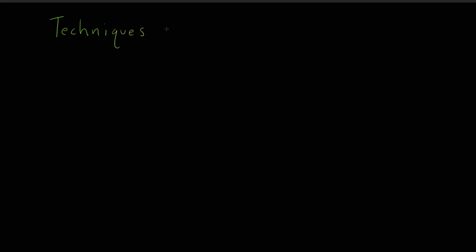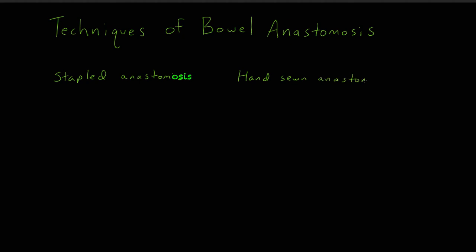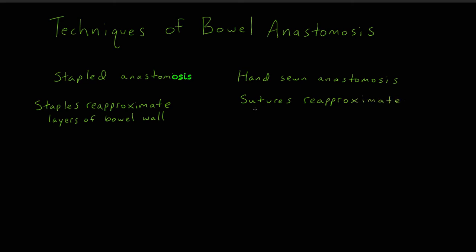Bowel anastomosis can be completed using a variety of surgical techniques. In general, these techniques can be arranged into two broad categories: stapled anastomosis and hand-sewn anastomosis. Stapled anastomosis use a variety of stapling devices to divide and then reconnect the layers of bowel wall. Hand-sewn anastomosis require the surgeon to divide the bowel and then place sutures to re-approximate the layers of the bowel wall of the associated bowel loops. If the individual layers of bowel wall are re-approximated using one series of sutures, the technique is described as a one-layer anastomosis.